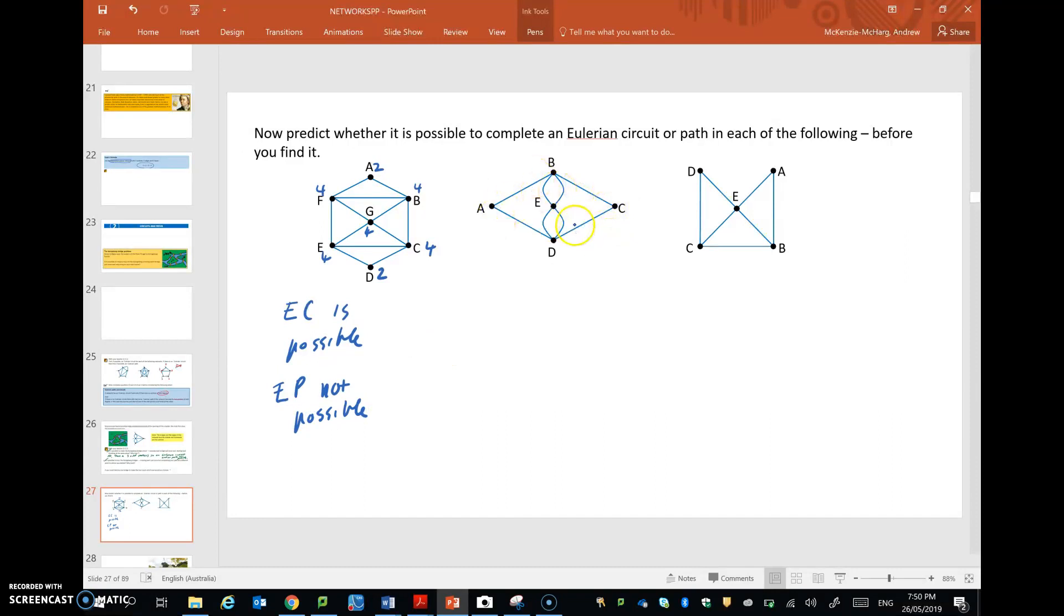What about this one here? Any odd vertices? I can't see any. So same again, EC only.